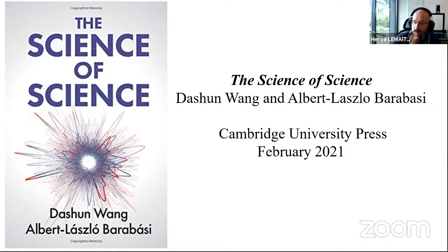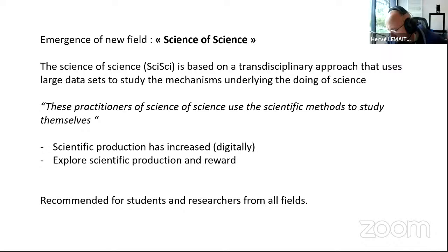The book is about the emergence of a new field — the science of science. I found this definition: "Science of science is based on a transdisciplinary approach that uses large datasets to study the mechanisms underlying the doing of science." It's research about research — kind of interesting to see this point of view. As we talked about last week, the brain is the only organ able to study itself; here it's a kind of the same thing — research studying itself.